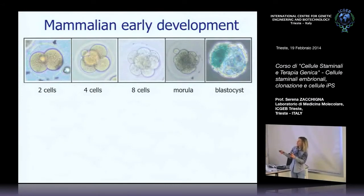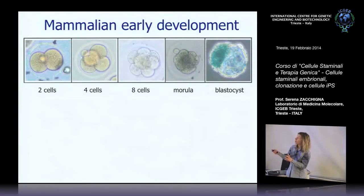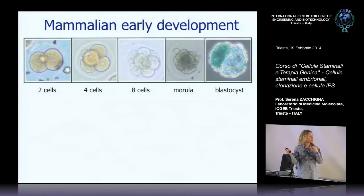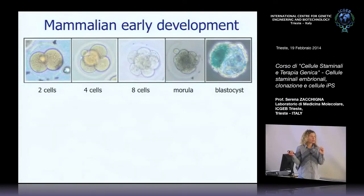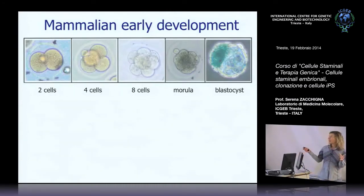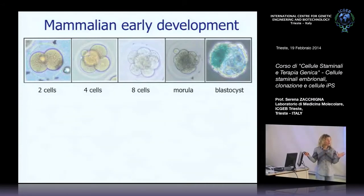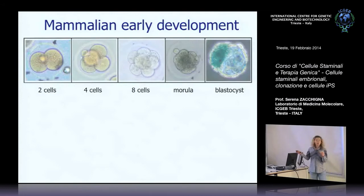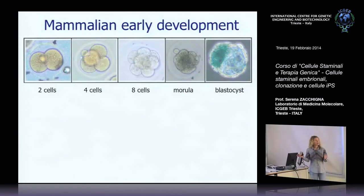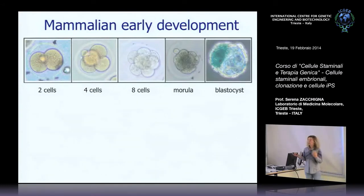Nello stadio iniziale, le cellule sono ancora tutte uguali e tutte totipotenti: se si prende via una di queste cellule, l'embrione continua a svilupparsi senza risentirne. Questo è il motivo per cui è possibile fare una diagnosi molecolare di malattia genetica negli embrioni fecondati in vitro, prelevando una cellula allo stadio di blastocisti precoce per eseguire la diagnosi genetica e decidere se impiantare o meno. Questa procedura era possibile prima della legge 40; in Italia oggi non si può più fare.